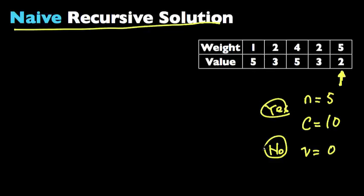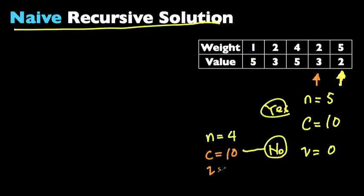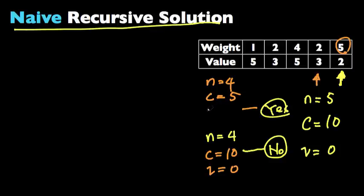If we say no for the last item, then n becomes 4 — we're moving the pointer to the left. Capacity doesn't change, so that's still 10, and the value doesn't change, so that's still 0. If we say yes, n becomes 4, the capacity becomes 10 minus 5 equals 5 — we can still carry 5 kilograms — and the value becomes 0 plus 2 equals 2.